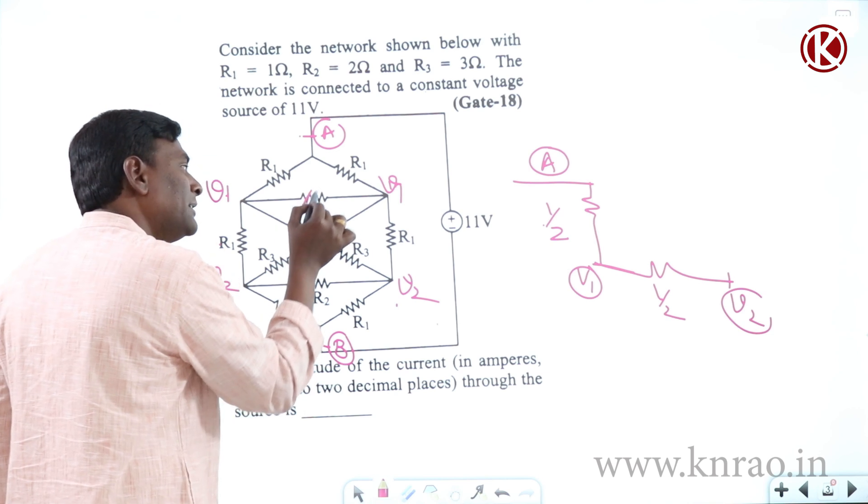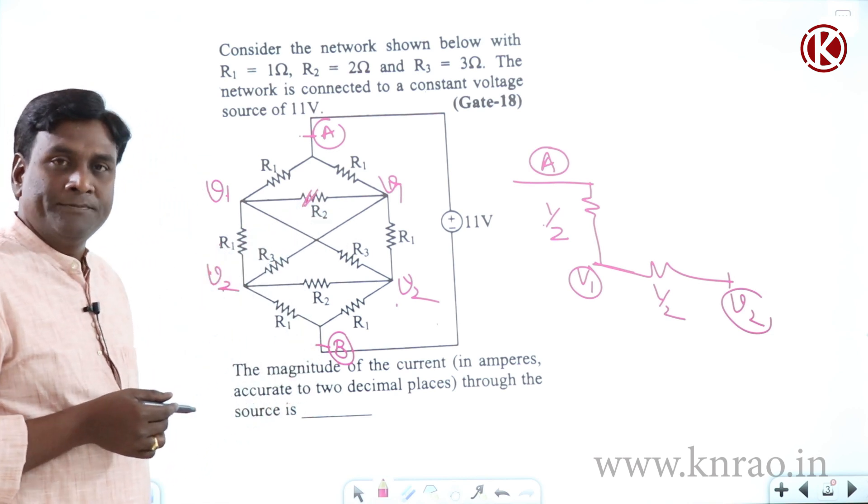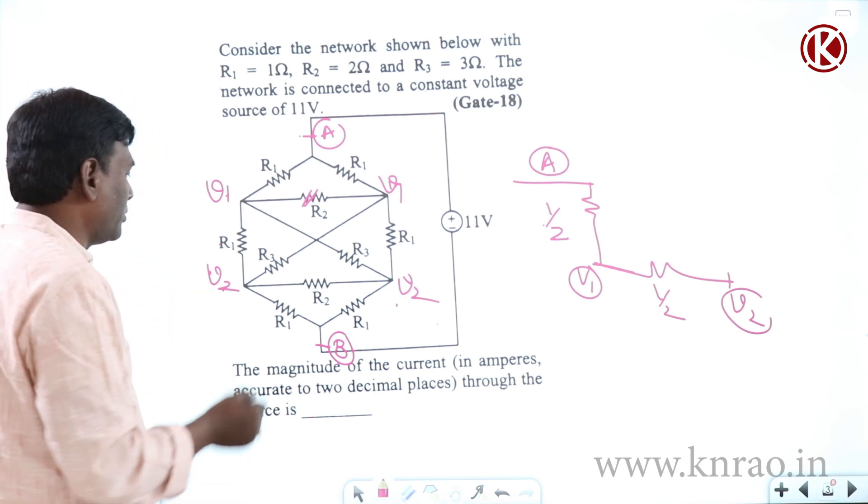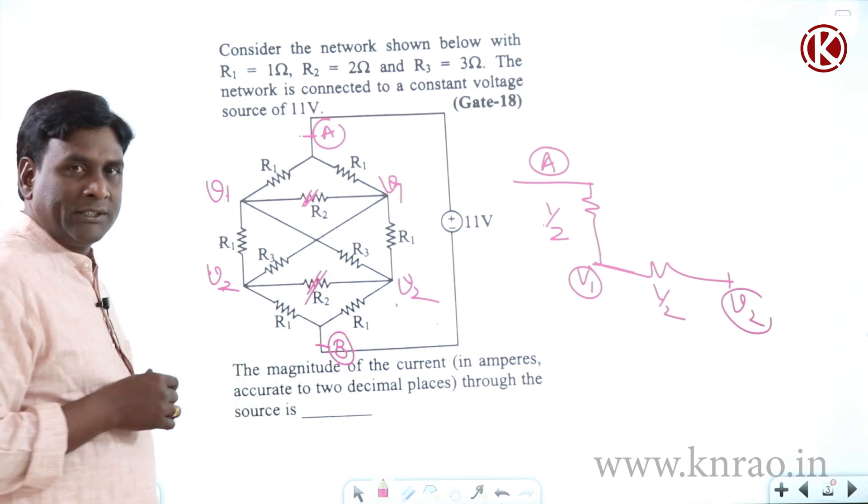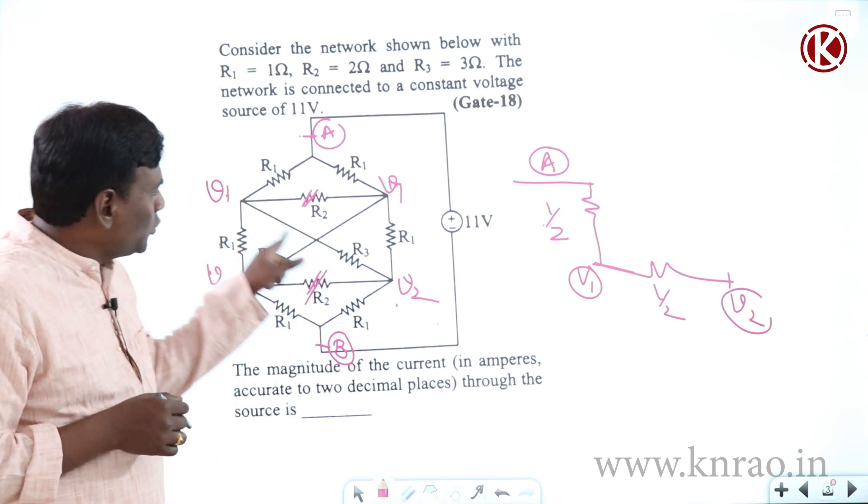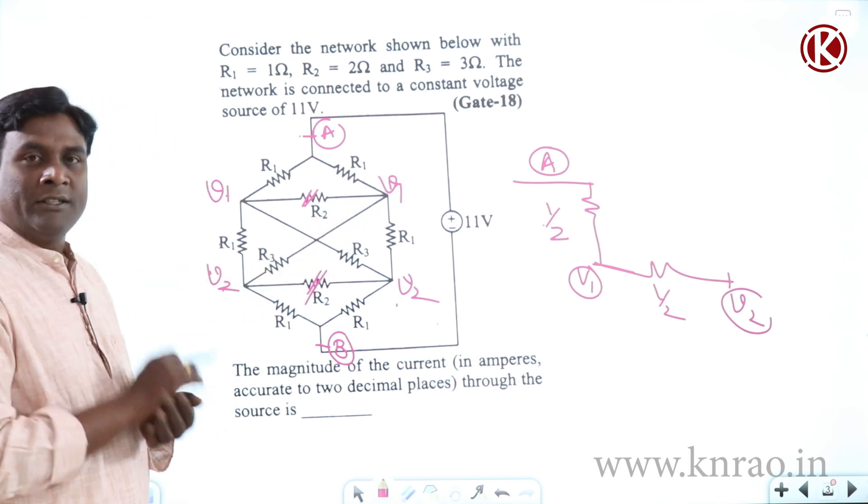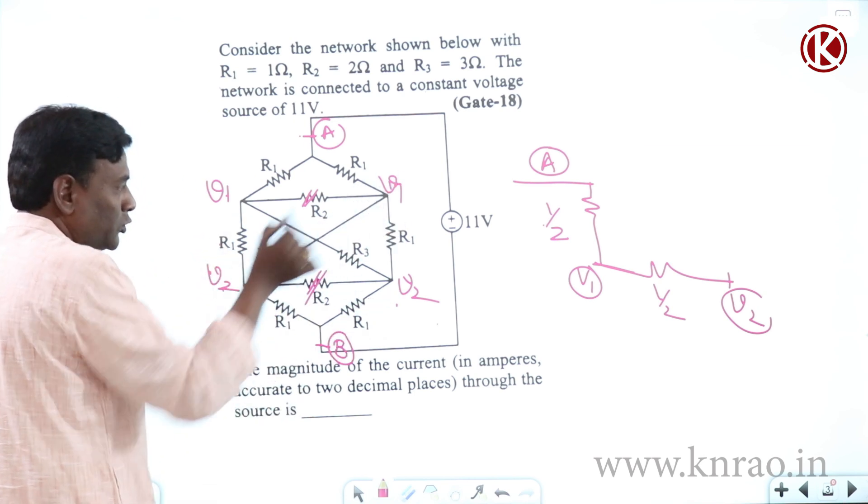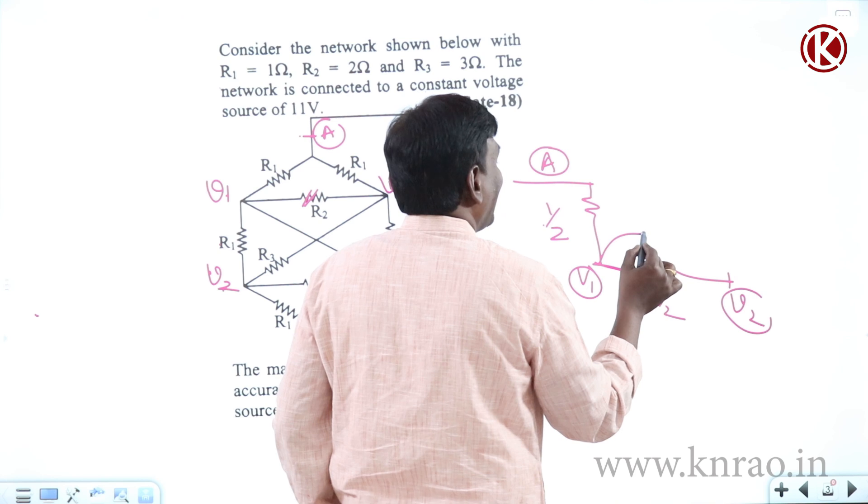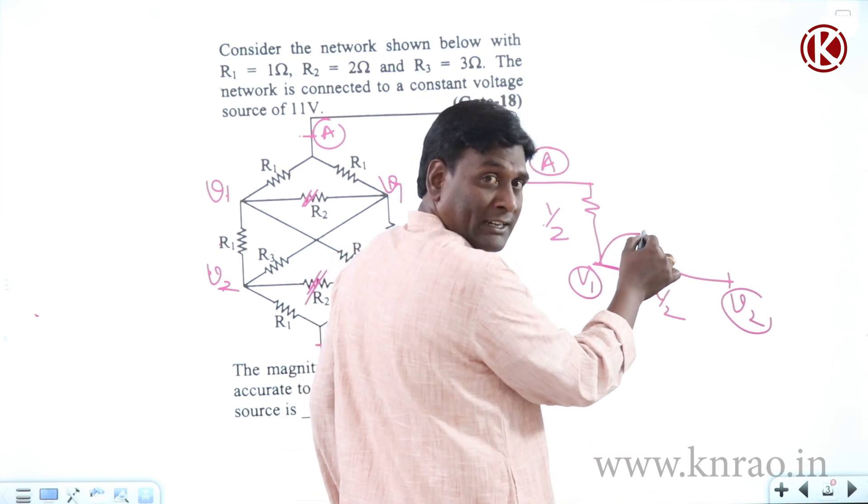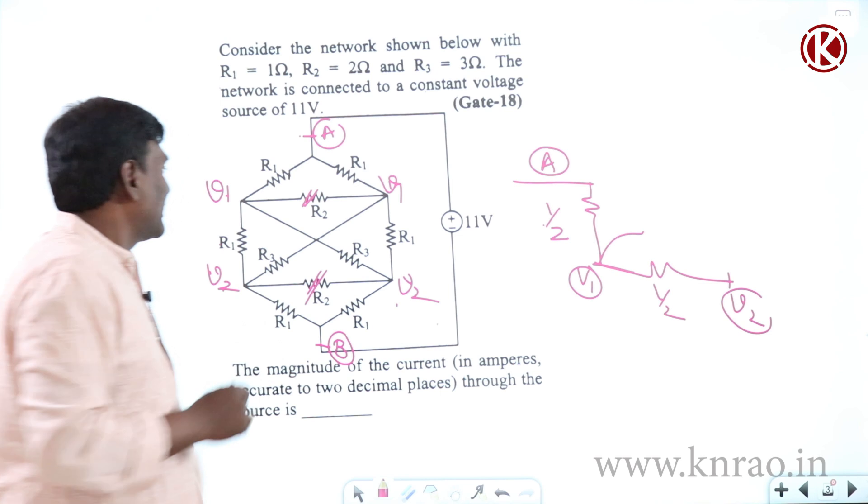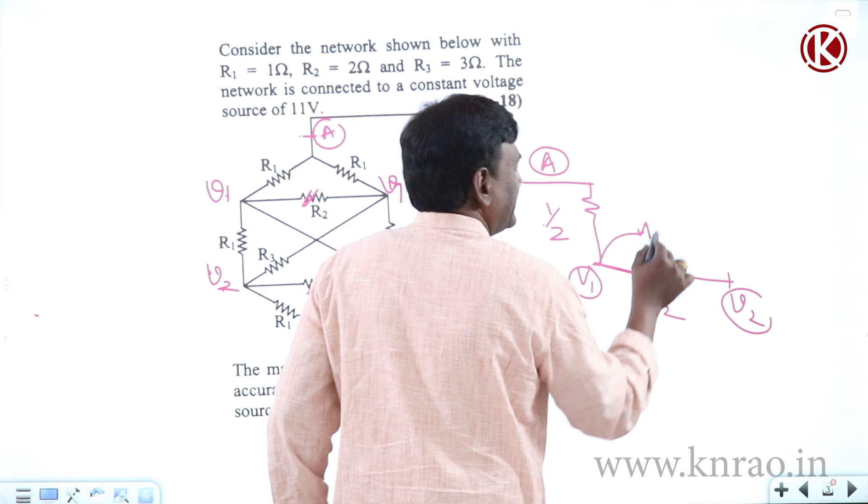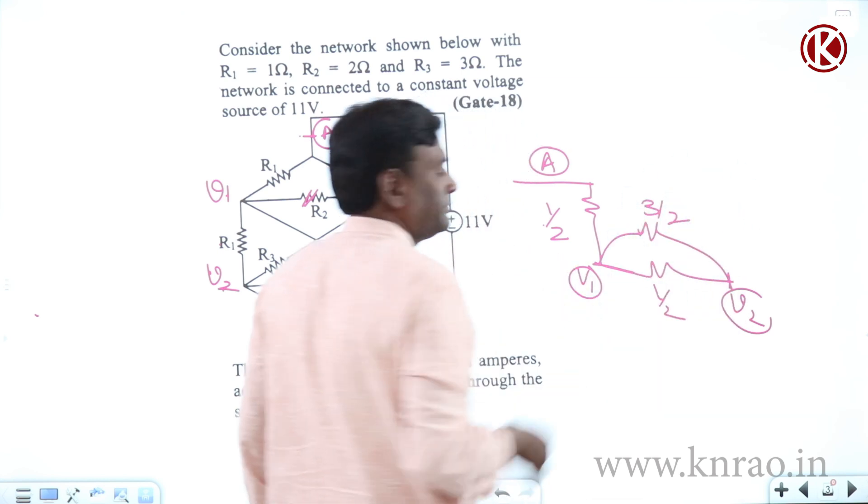Now V1 to V1, R2 is there. Let us remove it. Because with the same potential, if resistance is there, obviously current flowing through that will be 0. And V2 to V2, R2 is there, let us remove it. Now V1 to V2, R3 is there. V1 to V2, R3 is there. So V1 to V2, R3 by 2. Because they are connected in parallel. R3 and R3 are connected between same node pair V1, V2. So that is going to be R3 by 2, 3 by 2.